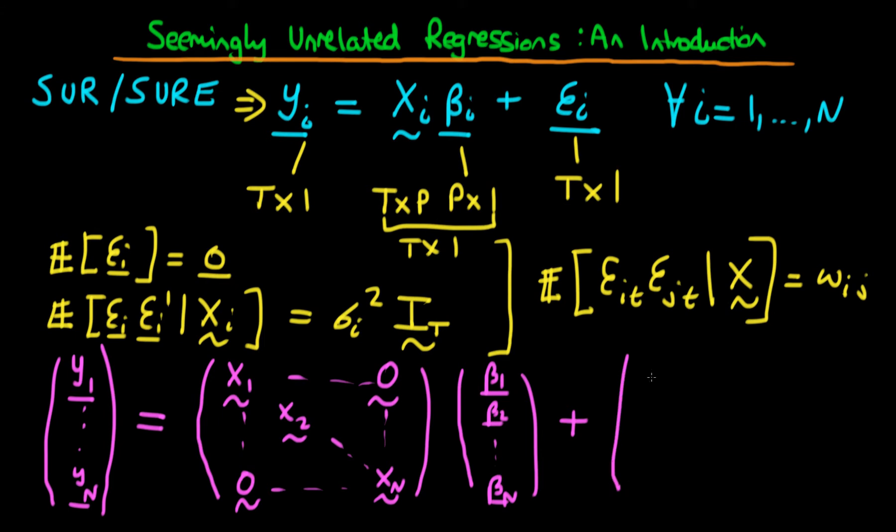All we need to do now is just stack each of the corresponding error vectors on top of one another. So we have E_1, E_2, through to E_n. And it's not hard to see how this works.